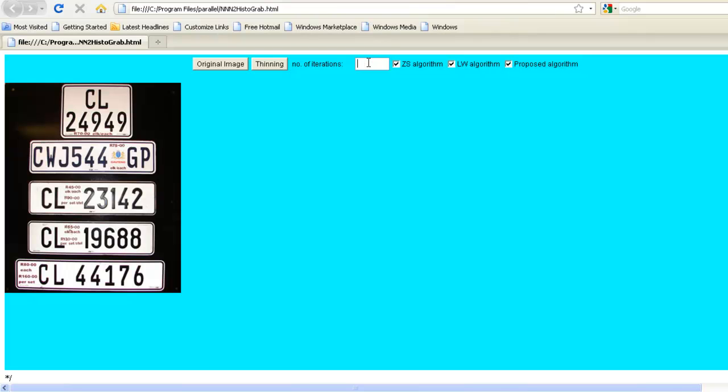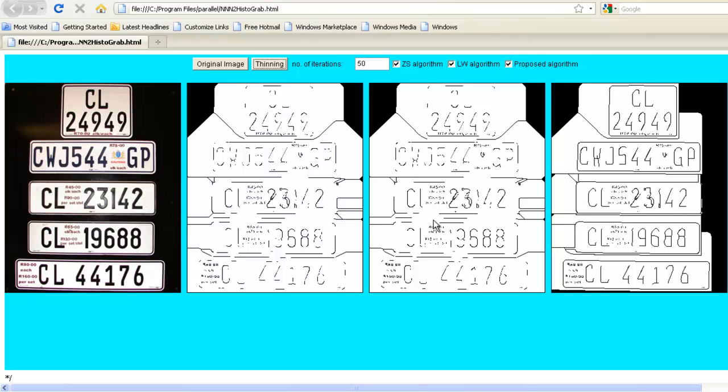We take the number of iterations as 50 and then we thin the image. As we can see, the previous two algorithms have no clarity in them, and the proposed algorithm is clear to retrieve the data back.